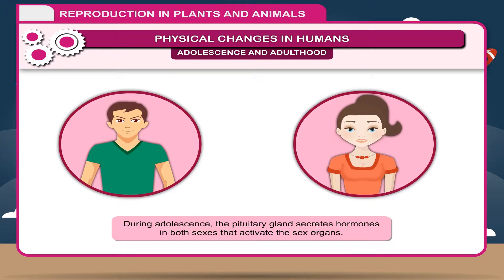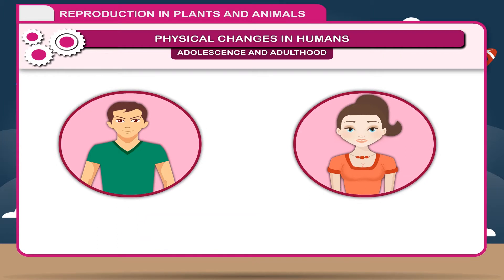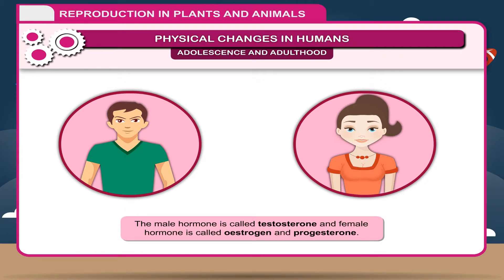During adolescence, the pituitary gland secretes hormones in both sexes that activate the sex organs. During this time, male and female genital organs produce male and female hormones. The male hormone is called testosterone, and the female hormones are called oestrogen and progesterone.